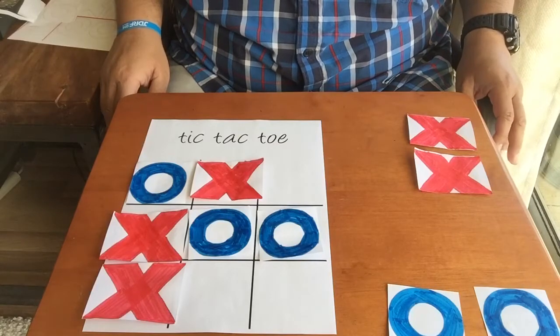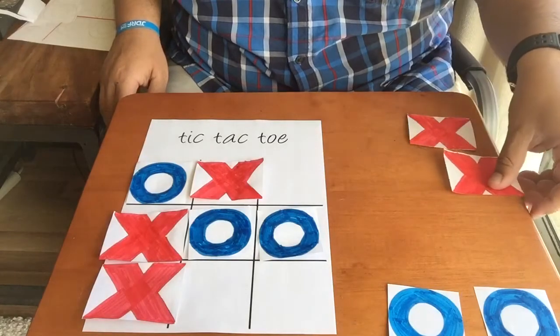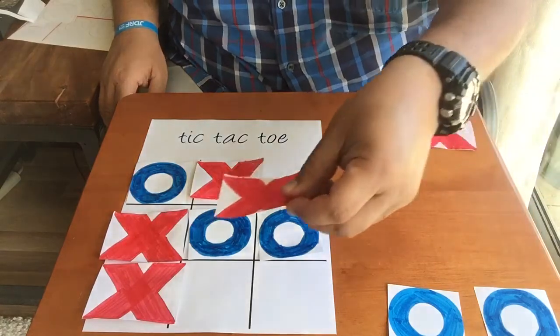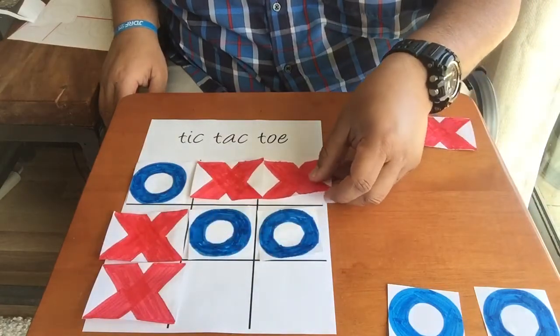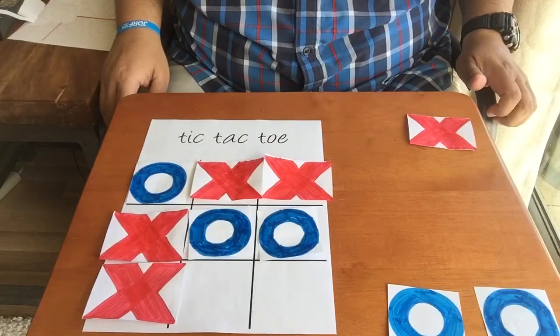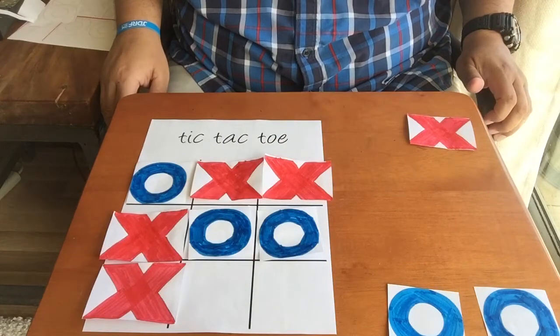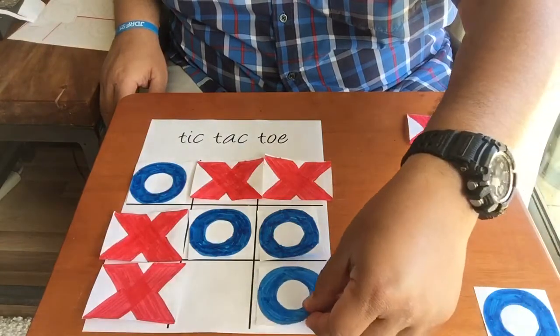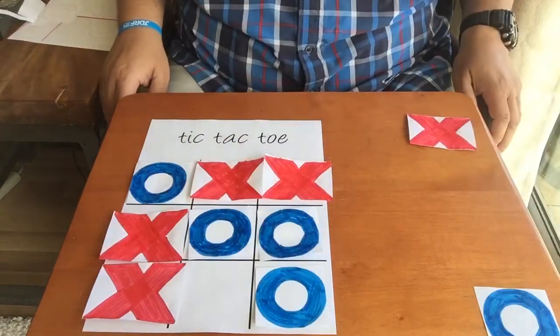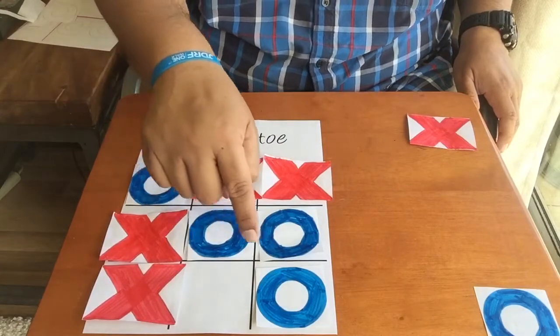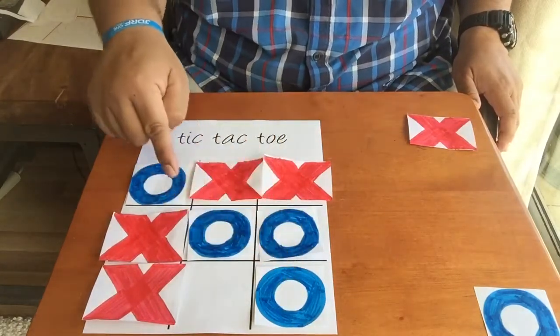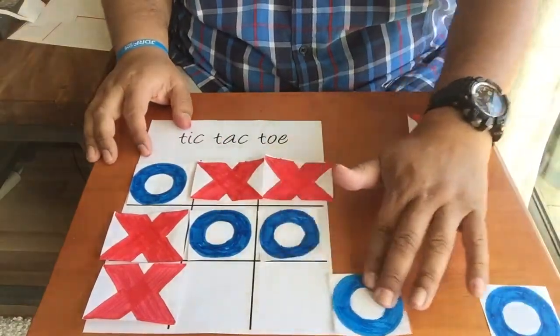Now it's the X's turn. He's going to try to go, let's say, right here. Uh-oh, but the X made a mistake. He left open a square down here at the bottom. And now look what happened. One, two, three O's in a row. That's tic-tac-toe. That means the O's just won. So let's clean the board up.